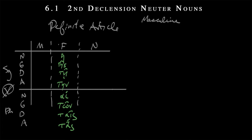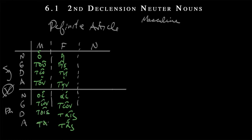And then we learned also in chapter five, the masculine. So we had ho, the. And then we had tou. Again, circumflex accent on the genitive, as on the dative, tō. And then ton in the accusative. And then in the plural, we had hoi, tōn, tois, and then tous. We remember that this diphthong, this omicron-upsilon, is really equal to omicron plus omicron — so it's just a long omicron of what we have here.